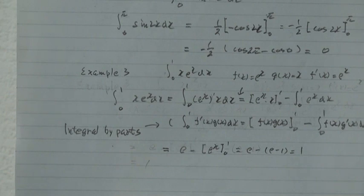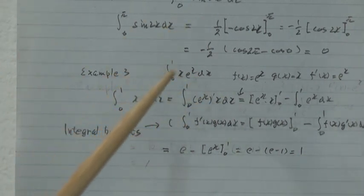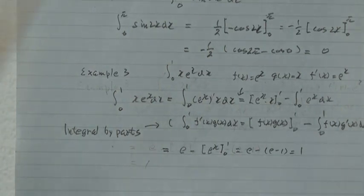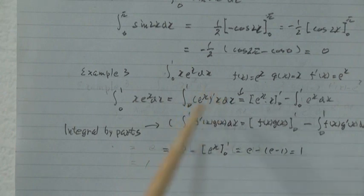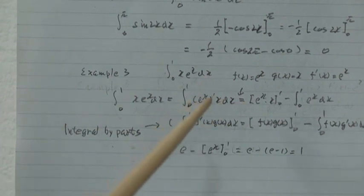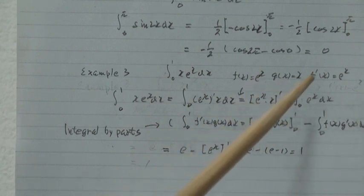Example 3: Integral from 0 to 1 of x·e^x dx. Now, let f(x) = e^x and g(x) = x. Then f'(x) = e^x. Using integration by parts with this formula: the integral of f'g equals fg minus the integral of f·g'.